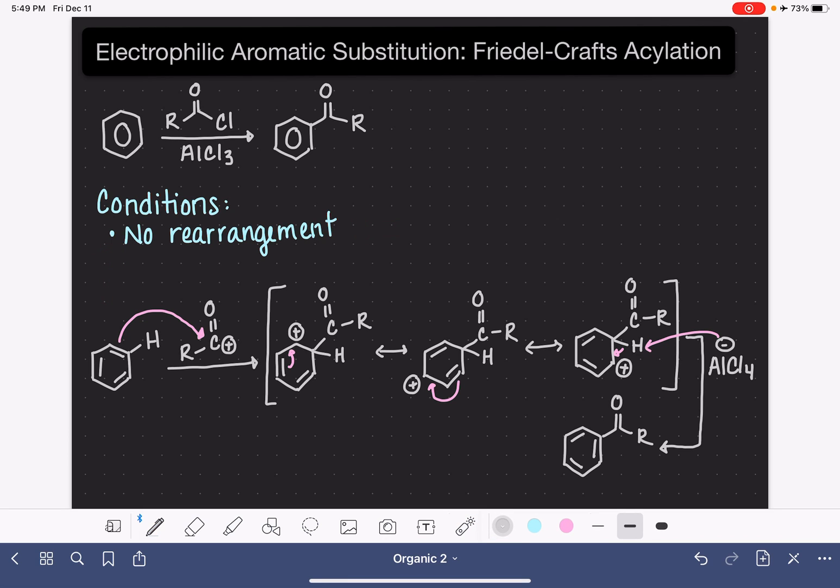Well, the reason is because this product of the Friedel-Crafts acylation reaction is very easily reduced to a regular alkyl group. Using something called amalgamated zinc, that's zinc that's been mushed together with mercury and some hydrochloric acid, we can simply remove that carbon-oxygen double bond.